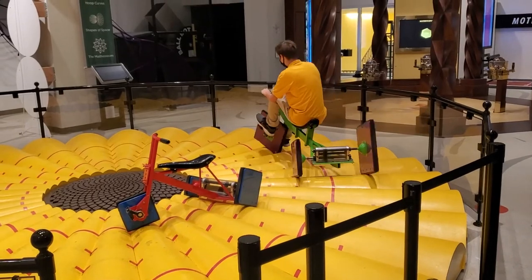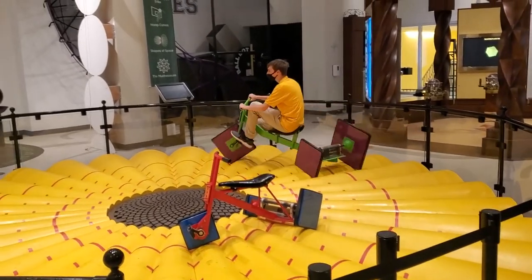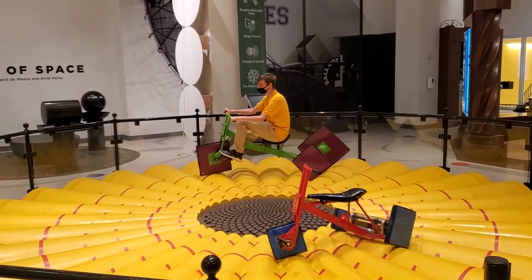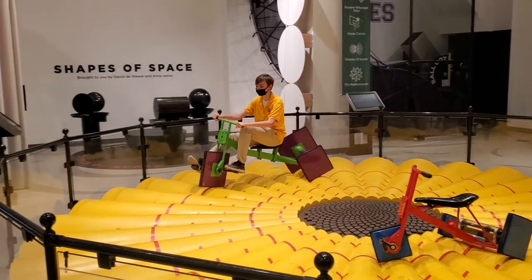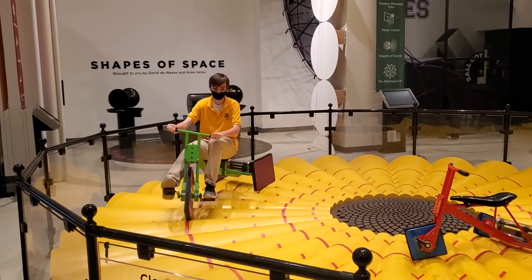How is that even possible? Shouldn't you feel a jolt every time the square turns? Clearly, the curved shape of the floor is important, but what's really going on here?